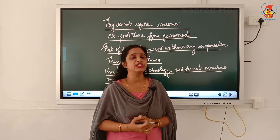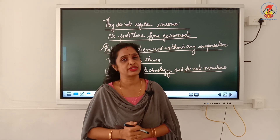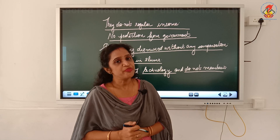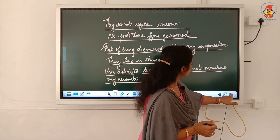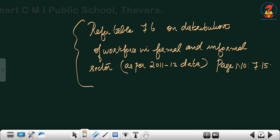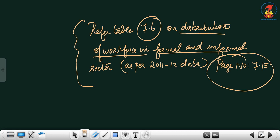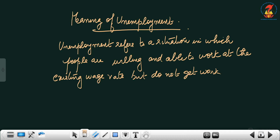All these points you have learned in class 10. You can recollect the differences between formal and informal sector establishments. For proper understanding, refer to table 7.6 on page 7.15 in your textbook — the heading is 'Distribution of Workforce in Formal and Informal Sector' as per 2011–12 data.